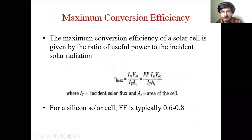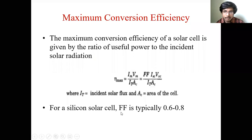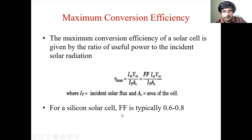Fill factor is a figure of merit for a solar cell, expressed as IM × VM divided by ISC × VOC. If the fill factor is high, then it is a good solar cell. If the fill factor is less, it will not convert a good amount of the output. For a silicon cell, fill factor is typically 0.6 to 0.8. If it is less than 0.6, then it is not a good solar cell.